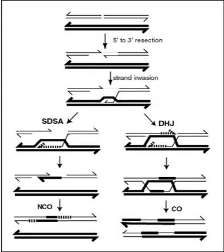In bacteria, transformation is a process of gene transfer that ordinarily occurs between individual cells of the same bacterial species. Transformation involves integration of donor DNA into the recipient chromosome by recombination. This process appears to be an adaptation for repairing DNA damages in the recipient chromosome by HRR. Transformation may provide a benefit to pathogenic bacteria by allowing repair of DNA damage, particularly damages that occur in the inflammatory, oxidizing environment associated with infection of a host.